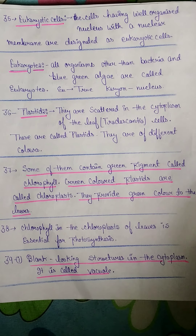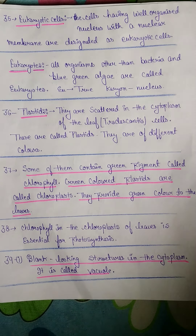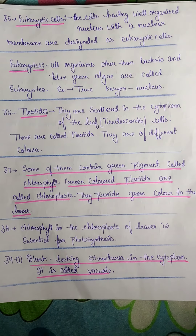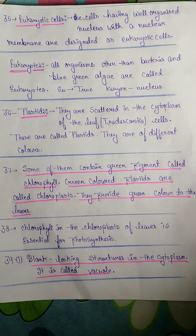Point 35: Eukaryotic cells — cells having a well-organized nucleus with a nuclear membrane are designated as eukaryotic cells. Eukaryotes are all organisms other than bacteria and blue-green algae. The prefix 'eu' means true. Point 36: Plastids — they are scattered in the cytoplasm of the leaf.